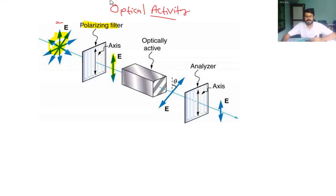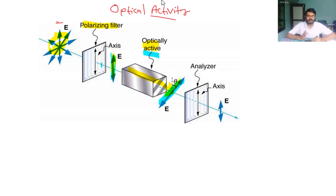That light is passed through an optically active medium. When the light is passed through the optically active medium, the plane of polarization gets changed. So when plane polarized light is passed through an optically active medium, the plane of polarization gets rotated through an angle. These types of mediums are said to be optically active. The property of a substance to rotate the plane of vibration or plane of polarization of a plane polarized light is called optical activity.